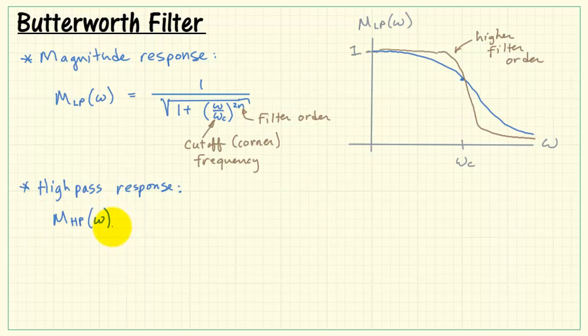We can also get a high-pass response by taking 1 and subtracting the low-pass response. Let's take a quick look at the sketch of that. We can start with 1 at DC. We would have 1 minus 1. That starts out at 0. We have our crossover point right here. And then as the low-pass response tails off towards 0, the high-pass response heads towards 1.